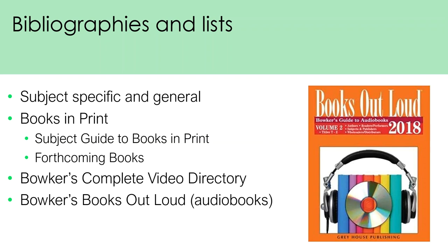For example, Books Out Loud 2019 costs $1,658, so most school libraries are unlikely to purchase this type of resource yearly. Unlike bibliographies, these bigger, more general lists aren't focused on including resources of a certain quality, so while they'll help you identify lots of items, you'll then need to think about the quality of those items and make a decision on whether you'll select them.